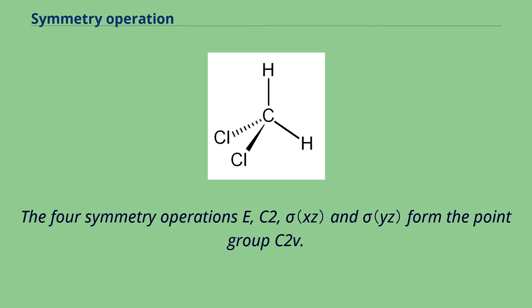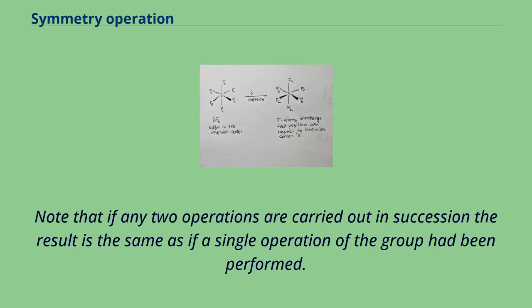The four symmetry operations E, C2, σ and σ' form the point group C2V. Note that if any two operations are carried out in succession the result is the same as if a single operation of the group had been performed.